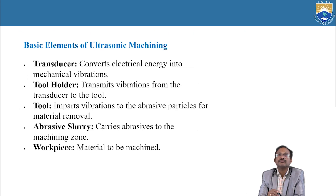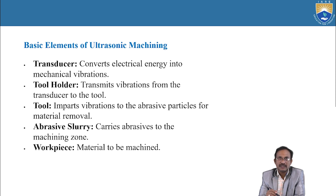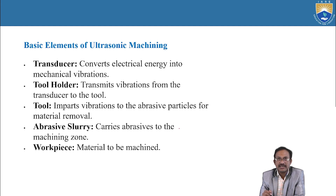Basic elements of ultrasonic machining. Transducer: converts electrical energy into mechanical vibrations. Tool holder: transmits vibrations from the transducer to the tool. Tool: imparts vibrations to the abrasive particles for material removal. Abrasive slurry: carries abrasive to the machining zone. Workpiece: the material to be machined.